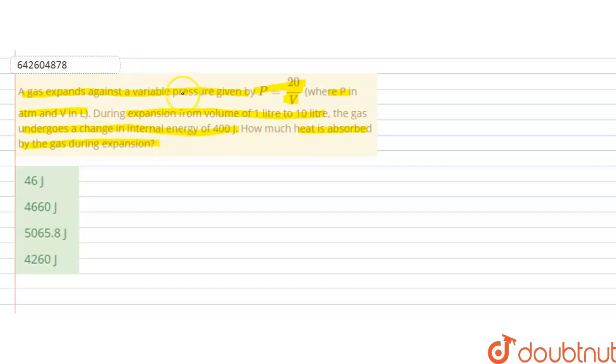So in this question, we are given that a gas expands by a variable pressure, that pressure is 20 by V, and pressure is in atmosphere and volume is in litres. During this expansion, the volume from 1 litre increases to 10 litre and the gas undergoes a change in internal energy of 400 joules. So we have to calculate the heat that is absorbed by the gas during expansion.